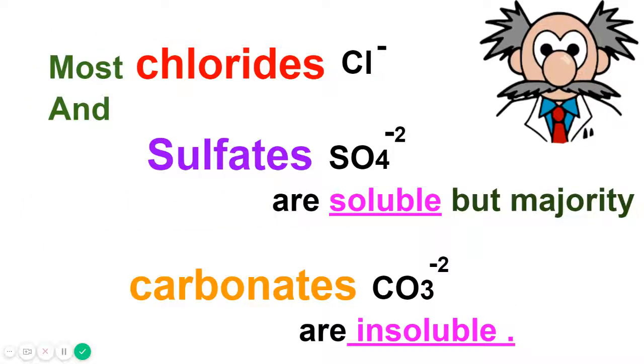Most chlorides and sulfates are soluble, but the majority of carbonates are insoluble. Because carbonates have strong bonds and it causes too much energy to break the bonds. So mostly carbonates are insoluble, whereas chlorides and sulfates are soluble.